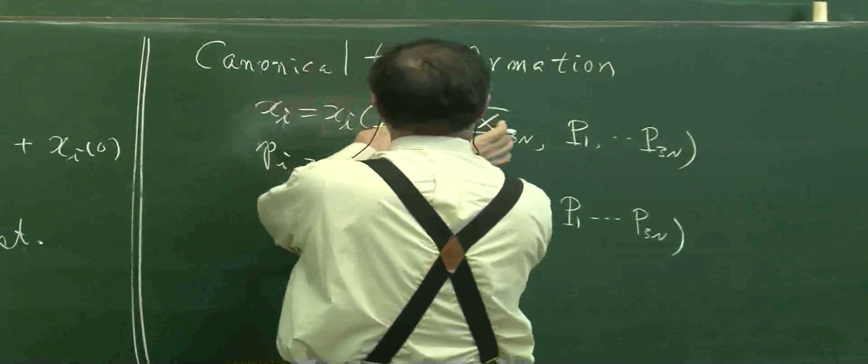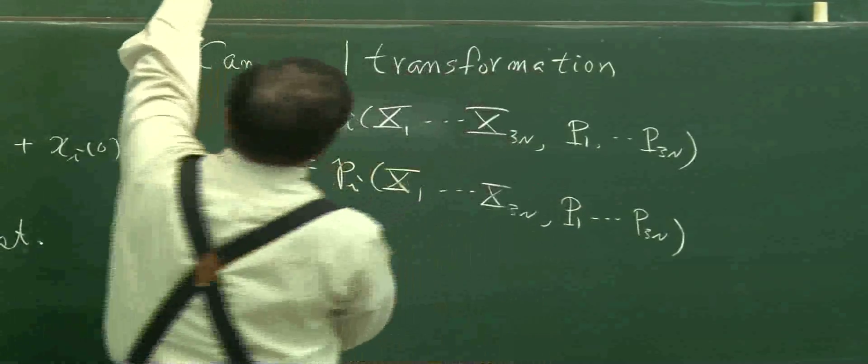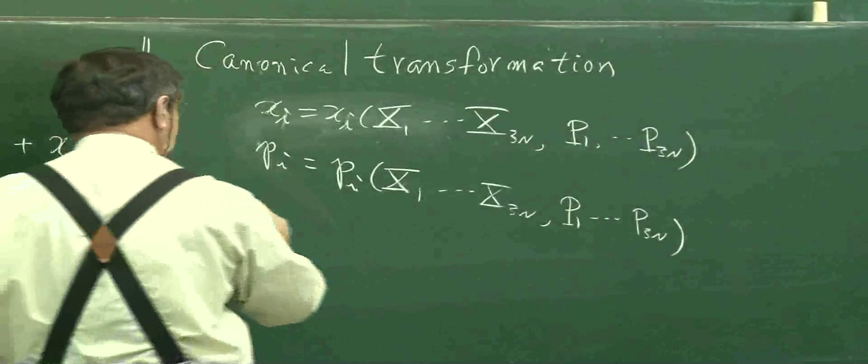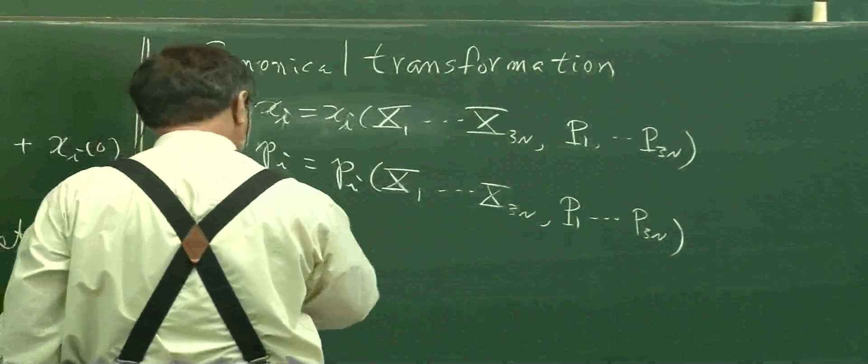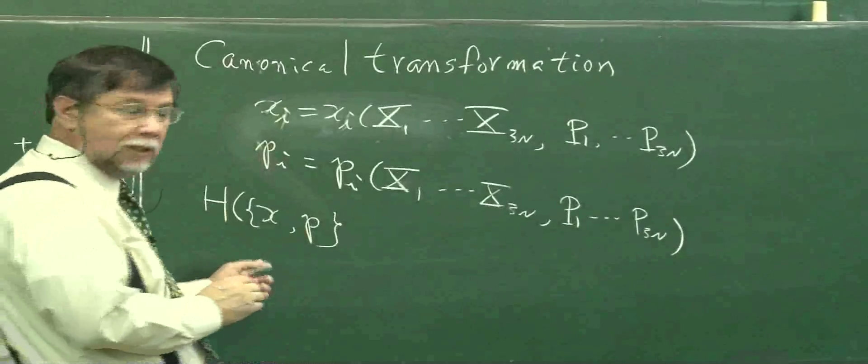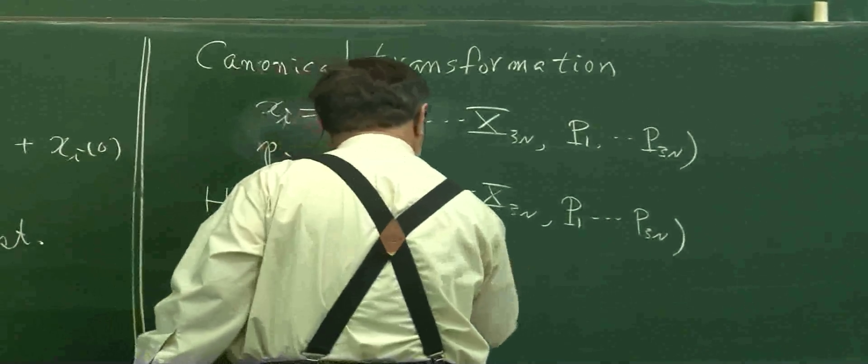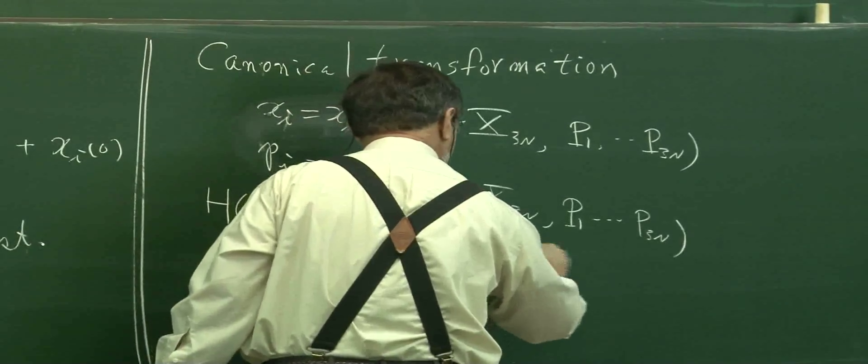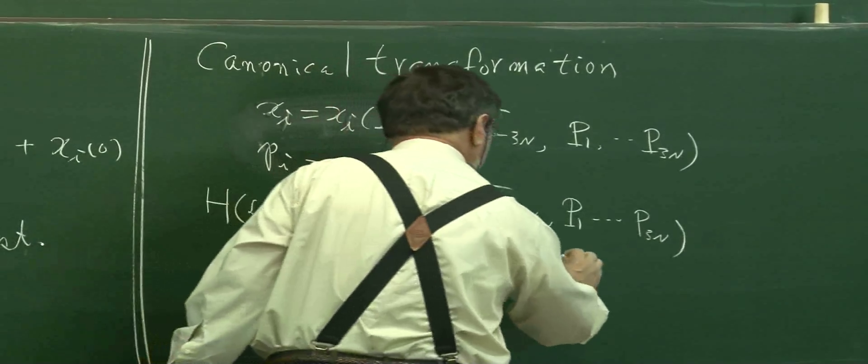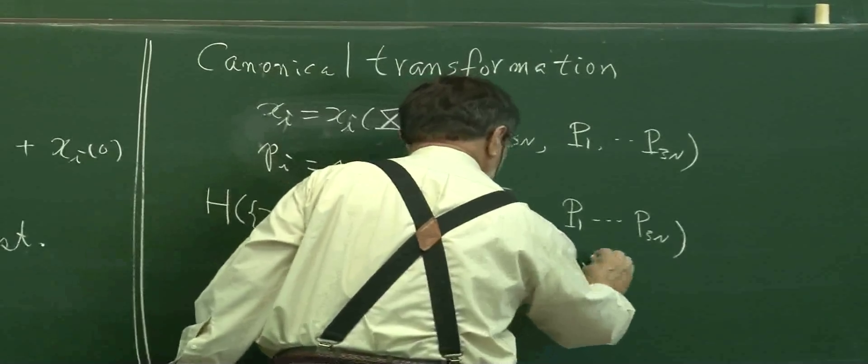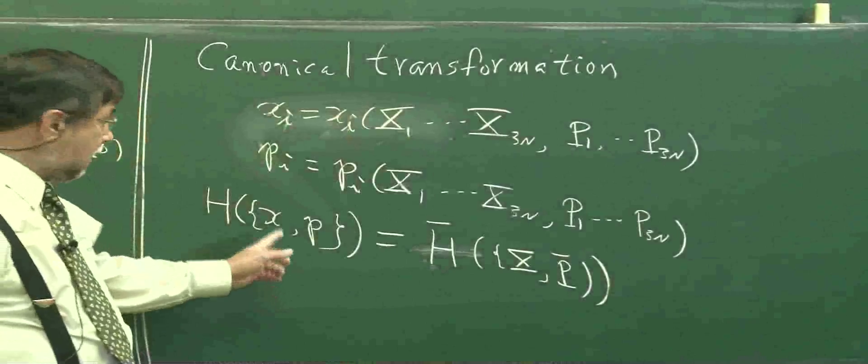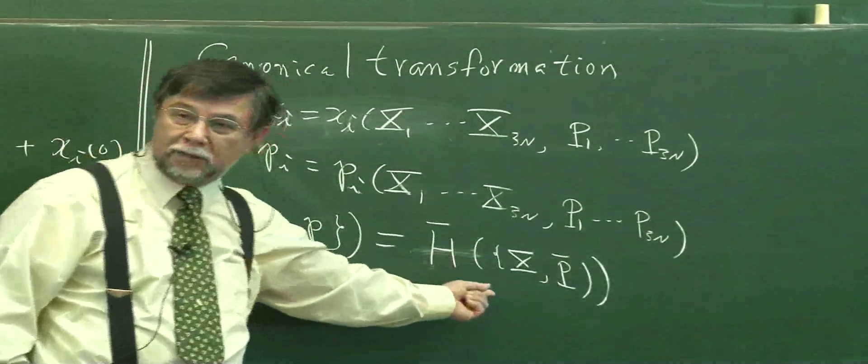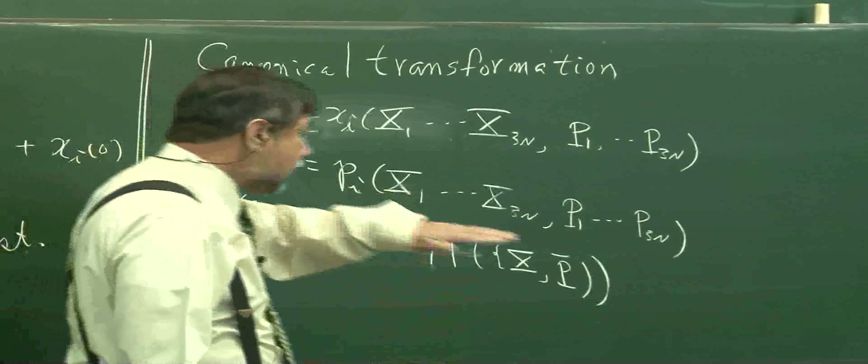After you substitute this into each variable, your old Hamiltonian, which was a variable of this one, goes to a new Hamiltonian with a different shape. You simply substitute this into each and change to the new variable.